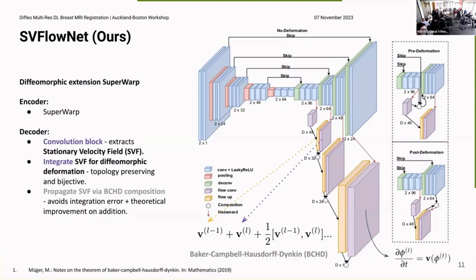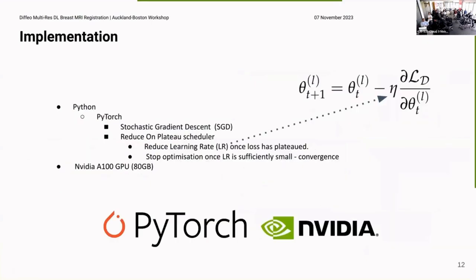SVFlowNet differs from SuperWarp by instead of extracting a deformation at the decoder blocks, you extract a velocity field. And that velocity field is integrated and gives you a diffeomorphic deformation. So what are these velocity fields? You want log Euclidean velocity fields because you want to avoid the integration error. So you can do that via addition or the way of doing this so that your velocity fields maintain some nice properties like commutativity is you use the Baker-Campbell-Hausdorff formula. And so we first introduced this layer and then we also implement the BCH formula.